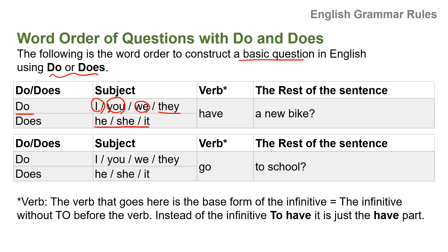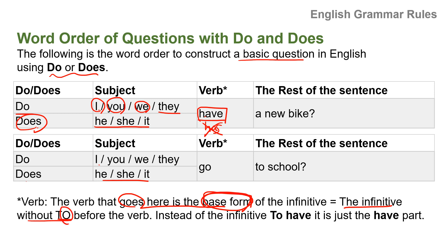For third person singular: Does he, does she, does it — followed by the base form 'have'. You never use 'has' here because we already use 'does' for the third person singular. For example: Do I go to school? Do you go to school? Do we go to school? Do they go to school? And for third person singular: Does he go to school? Does she go to school? Does it go to school? The verb used is the base form of the infinitive — the infinitive without 'to'. So instead of 'to have', we just use 'have'.